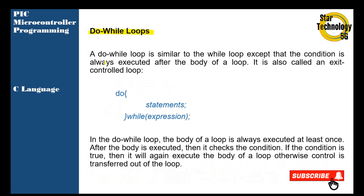Do-while loop: a do-while loop is similar to the while loop, except that the condition is always executed after the body of the loop. It is also called an exit control loop. The syntax is: do, statement, while, expression. In a do-while loop, the body of the loop is always executed at least once. After the body is executed, it then checks the condition. If the condition is true, it will again execute the body; otherwise, control is transferred out of the loop.